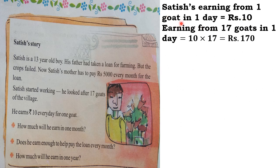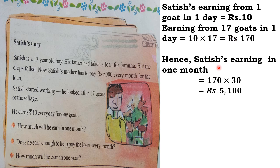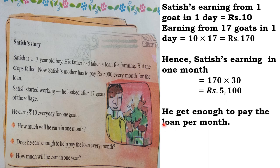Satish is earning for 1 day: 1 goat in 1 day is Rs. 10, and earning for 17 goats is 10 × 17 = Rs. 170. Satish's earning in 1 month is Rs. 170 × 30 = Rs. 5,100. So he will get enough to pay the loan per month — he has to pay Rs. 5,000 and he is earning Rs. 5,100.